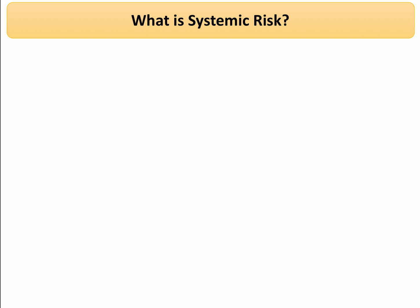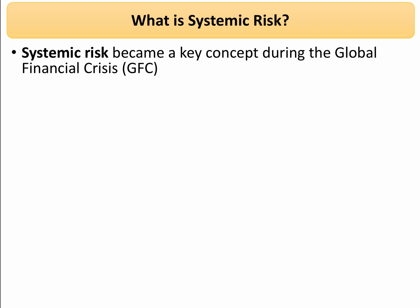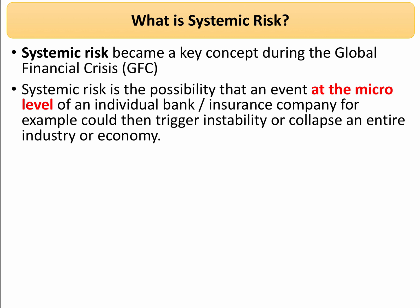So what is systemic risk? Systemic risk became a really key concept during and after the global financial crisis. Systemic risk is the idea that there's a possibility that one single event or cluster of events at a micro level — at the level, for example, of an individual bank or insurance company — could in theory lead to a domino effect, which could then trigger instability and collapse of an entire industry or perhaps even an economy. This is sometimes known as the domino effect.